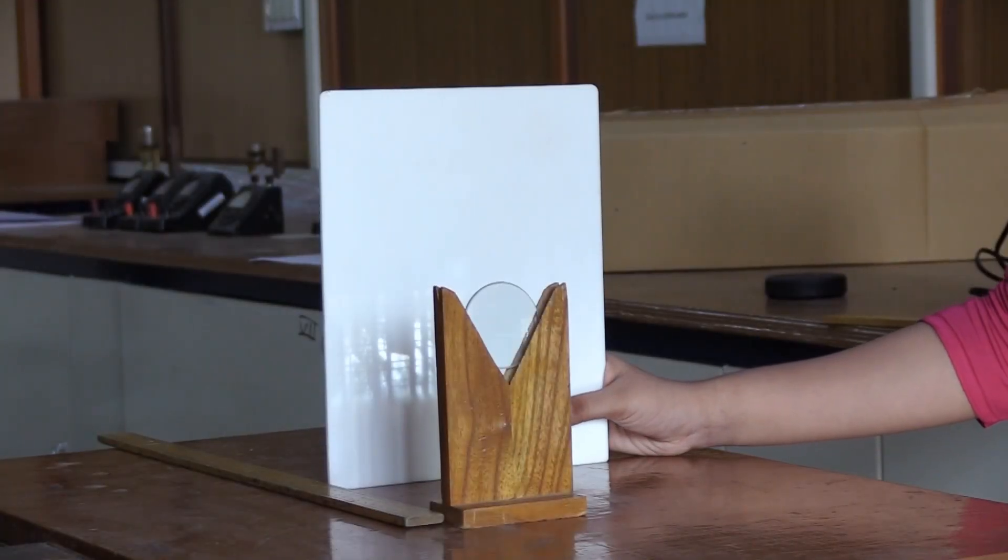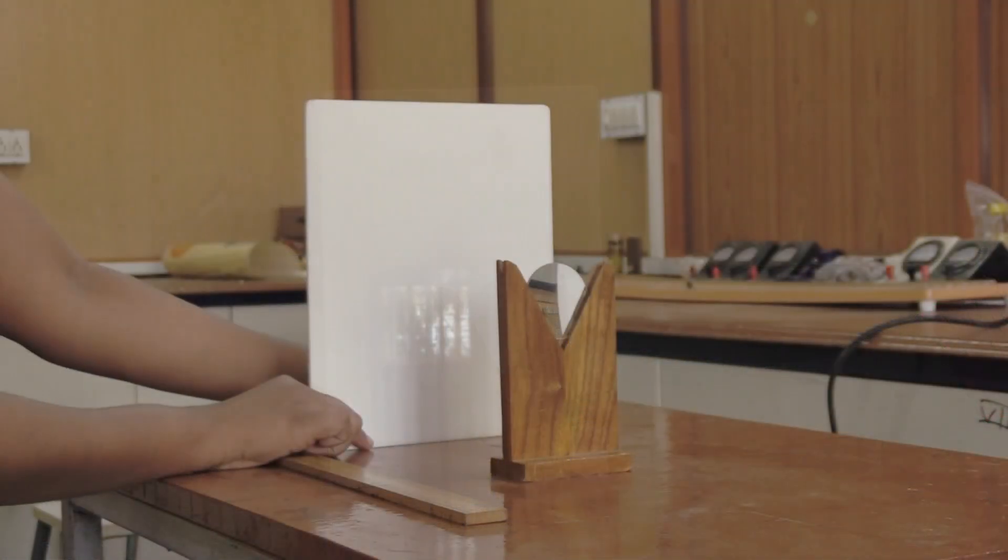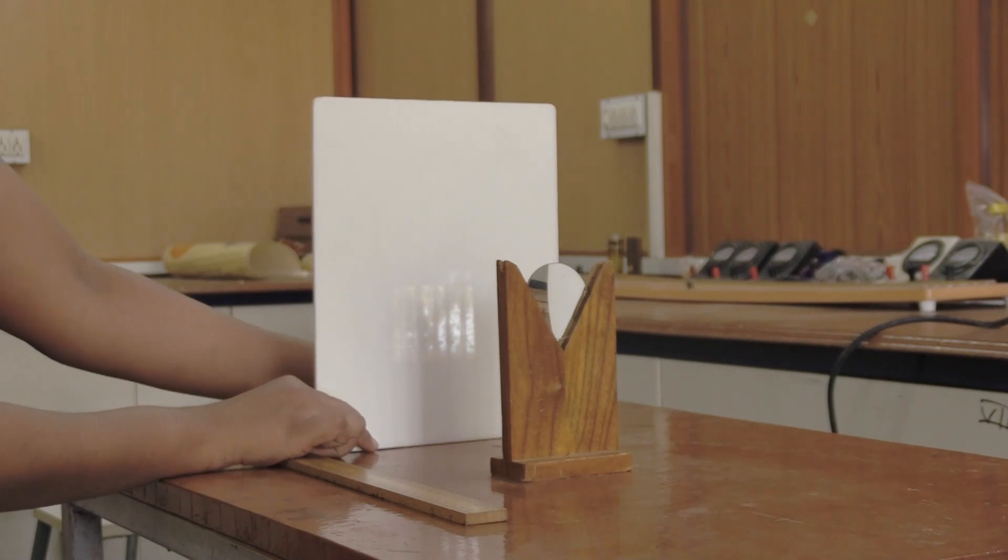Repeat the experiment at least three times and record it in the observation table. Find the mean value of focal length.